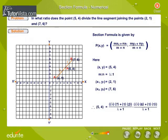Substituting these values in the formula, we get (5,4) is equal to lambda into 7 plus 1 into 2 divided by lambda plus 1.